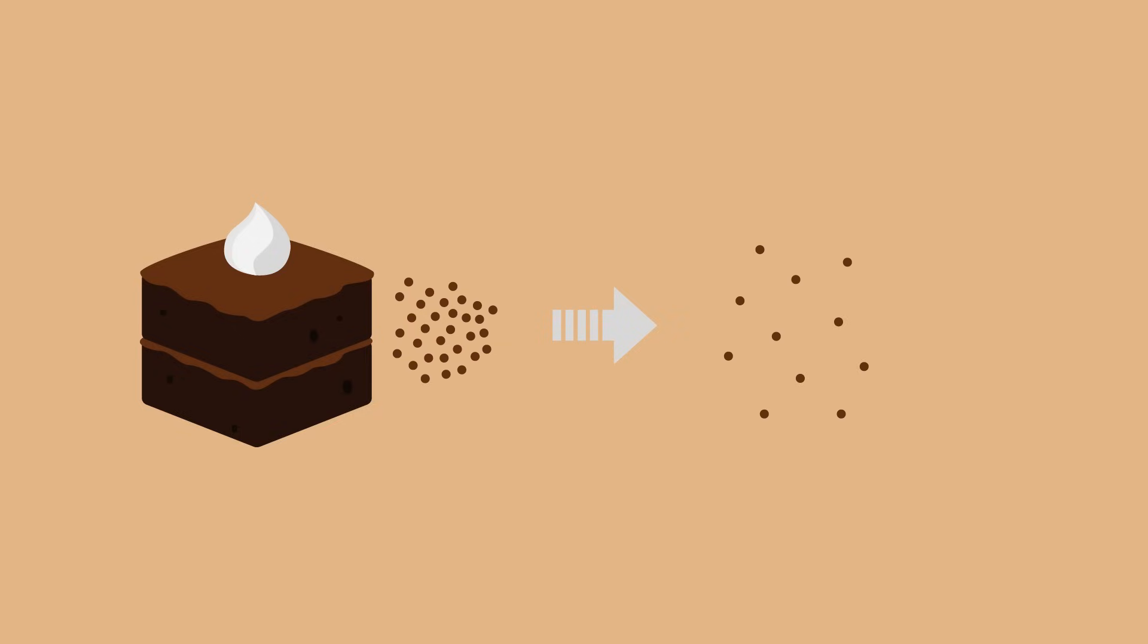In diffusion, particles move down the concentration gradient until they are evenly distributed. For particles to move like this, they need to be a gas or particles of a dissolved substance.